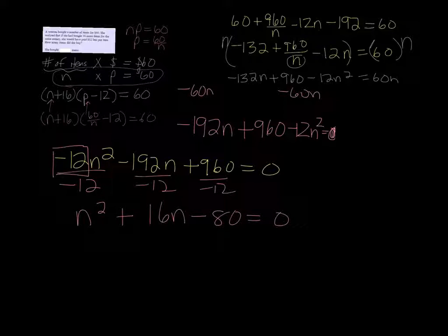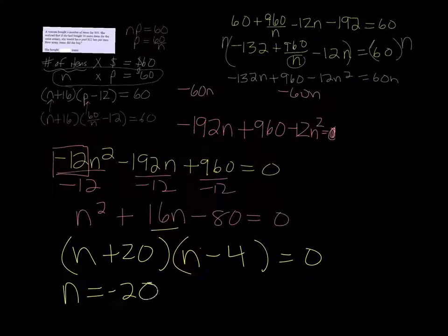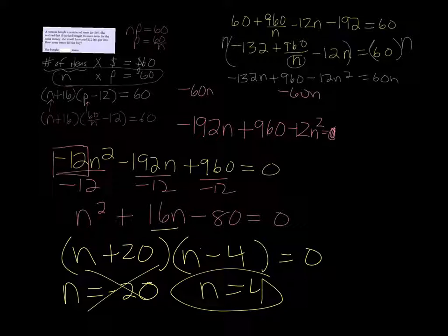So this factors nicely for us. N times N is N squared. 20 and 4 will give us 80, and of course we want to have one of them be negative, so I want my negative to be on the 4 because I want a positive 16 when I'm done. So we get N equals negative 20, which doesn't make any sense, we can't have negative 20 items, and N equals 4. So the number of items in this case was 4.